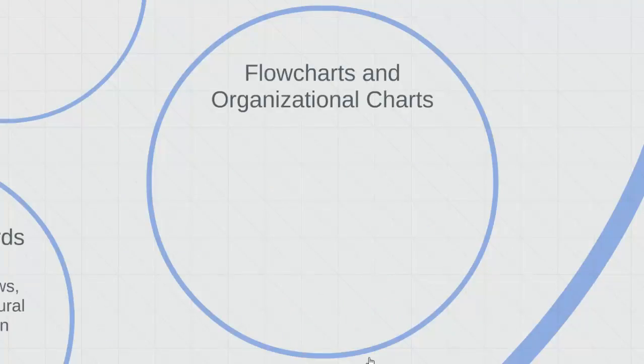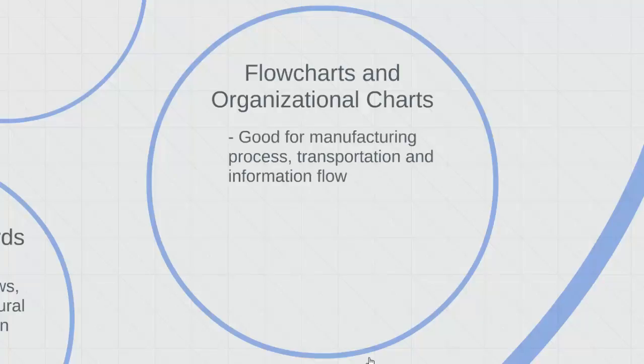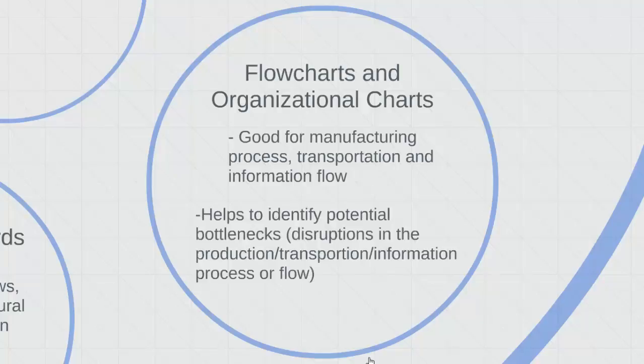Last, flow charts and organizational charts. Flow charts depict the sequence of activities performed by a particular organization or process. An organization chart shows the various levels of hierarchy of employees within the organization. Flow charts are especially good for manufacturing processes, transportation, and information flow. Information flow is especially important for most businesses today, even small businesses. A flow chart is especially useful to identify potential bottlenecks, which are disruptions in the production, transformation, or information flow that might have a significant impact on the organization. Think about bottlenecks on the highway or interstate. A bottleneck on the interstate can cause traffic to come to a halt for many miles. Similarly, an organizational bottleneck could cause the business flow to come to a halt for many hours or even days.